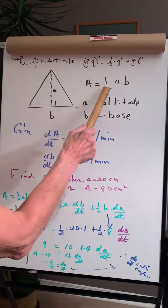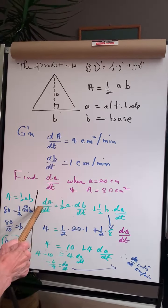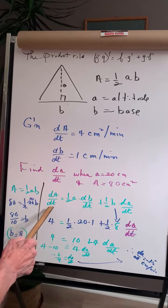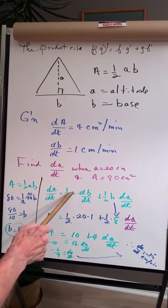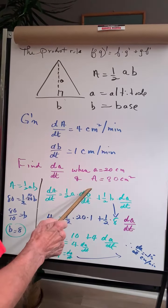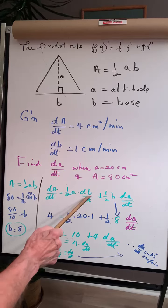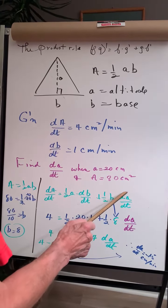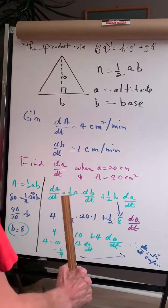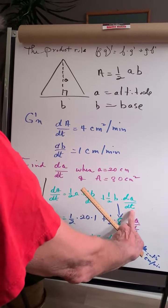I have to take the derivative using the product rule. The change in the area with time is going to be one-half a times the change in b with time, plus one-half b times the change in a with time. Notice the b's are in a minute, the a's are on the outside.